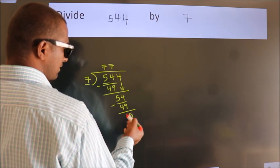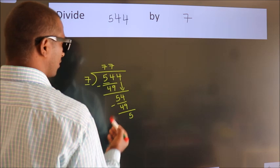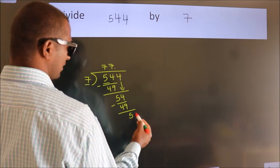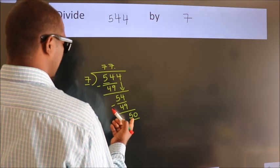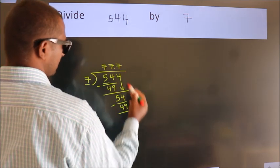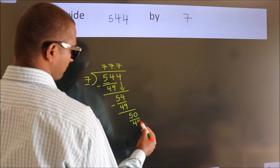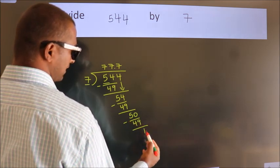After this, no more numbers to bring down. So what we do is put a dot and take 0, giving us 50. A number close to 50 in the 7 table is 7 sevens, 49. Now we subtract, we get 1.